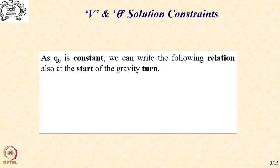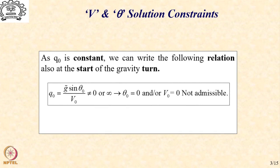What are the features of this solution? We note that if q0 is constant throughout the trajectory including the starting point at t = 0, it has to be valid at all points. So the same relation is also valid at the initial point or the start of the gravity turn. We can write down the applicable relation for velocity at the start of the gravity turn as shown below.